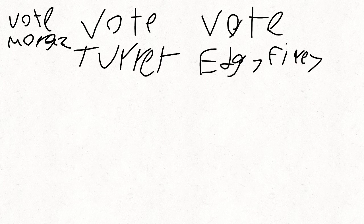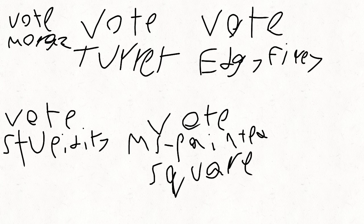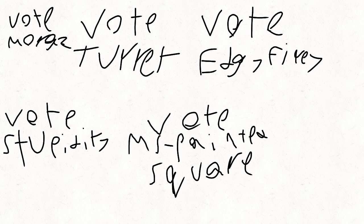Five hours of people figuring out how to disarm the bomb. Alright, people who are UFR: Morgues, Turret, Edgy, Fiery, Stupidity, and MS Painted Square. Vote for who you want eliminated.